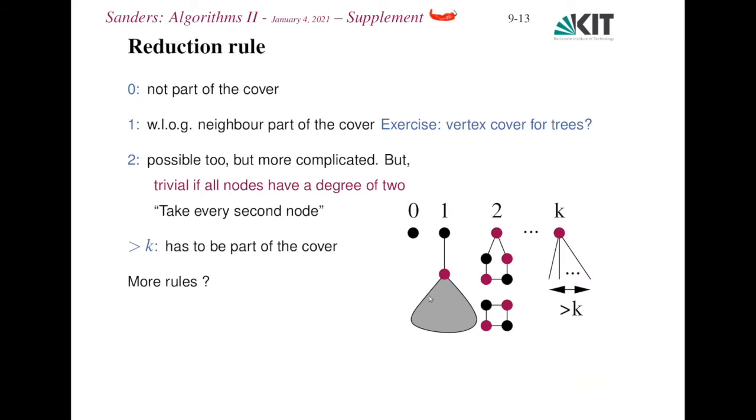Let's look a little bit more at how far can we drive this. In particular, it's interesting to look at more reduction rules. We have already used a reduction rule for degree 0 vertices. They are not part of an optimal cover, so we can remove them. Maybe let's systematically look at larger and larger degree of the vertices.